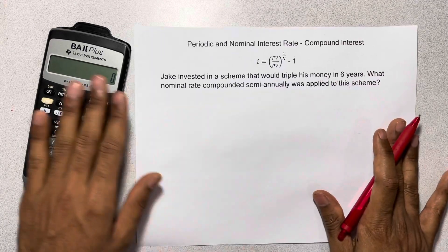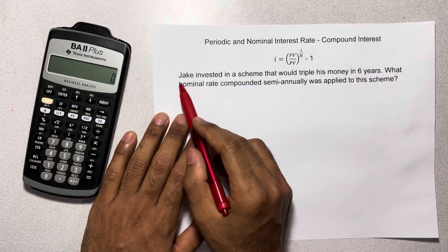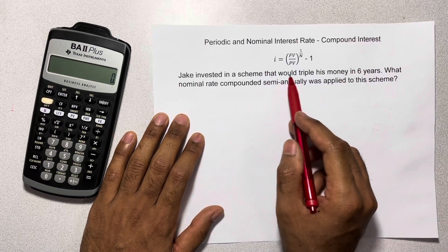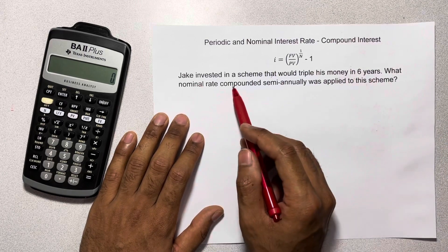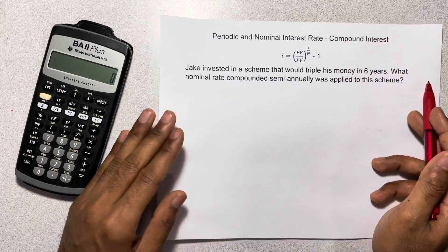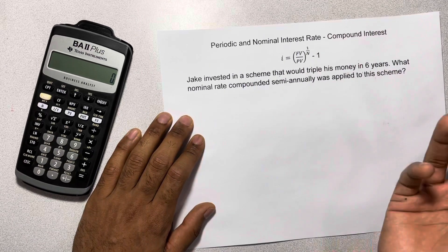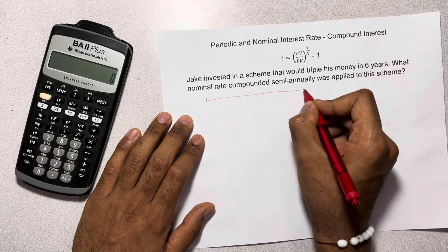Now let's quickly jump into this question that I've prepared. Here it says that Jake invested in a scheme that would triple his money in 6 years. What nominal rate compounded semi-annually was applied to his scheme? So we know with a compounding question or a time value of money question, the first thing we do is draw out a quick timeline.